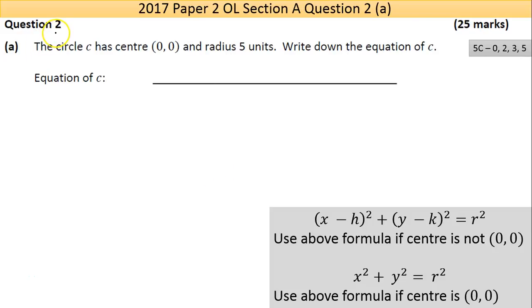Okay, so here we are on question 2 of the 2017 paper 2, and it's a circle question. The circle C has center (0,0) and radius 5 units. Write down the equation of C. Now I love the circle because it's pretty standard - there's certain things that kind of ever come up, and one is to be able to find the equation of a circle.